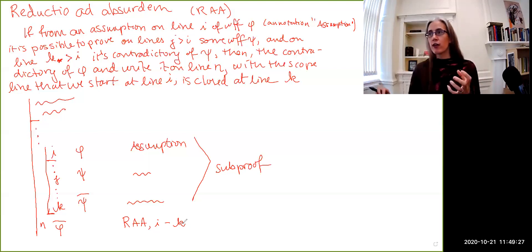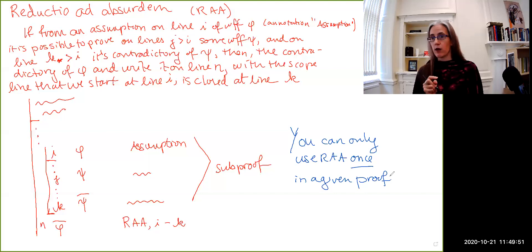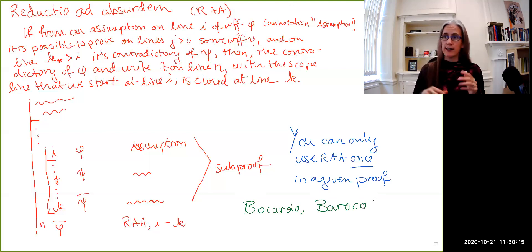Now, there is a constraint on this particular rule, namely that you can only use it once. So, you can only use RAA once in a given proof. Nothing that we want to prove using this method ever requires us to use it more than once. So, it just makes things easier if we specify that we don't. Only two of the syllogisms require the use of this rule. They are Bocardo and Barocco. I'll give you an example of one of them and leave the other one as kind of an exercise to the reader.